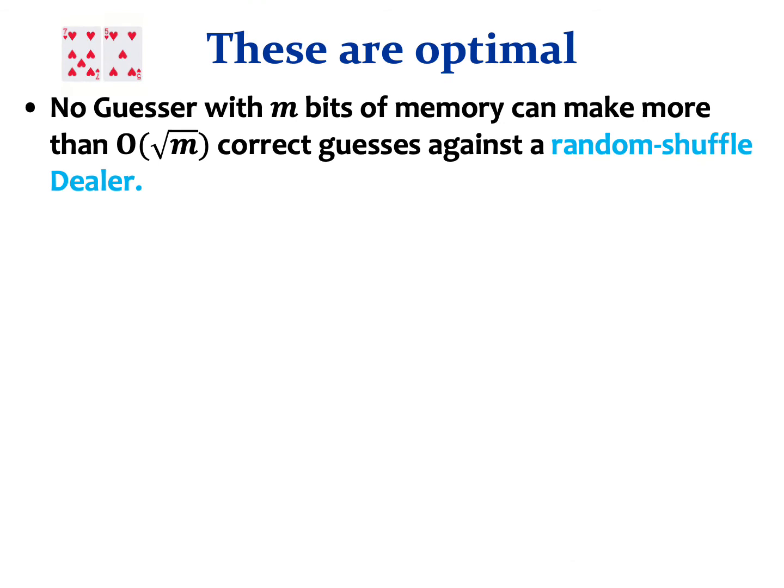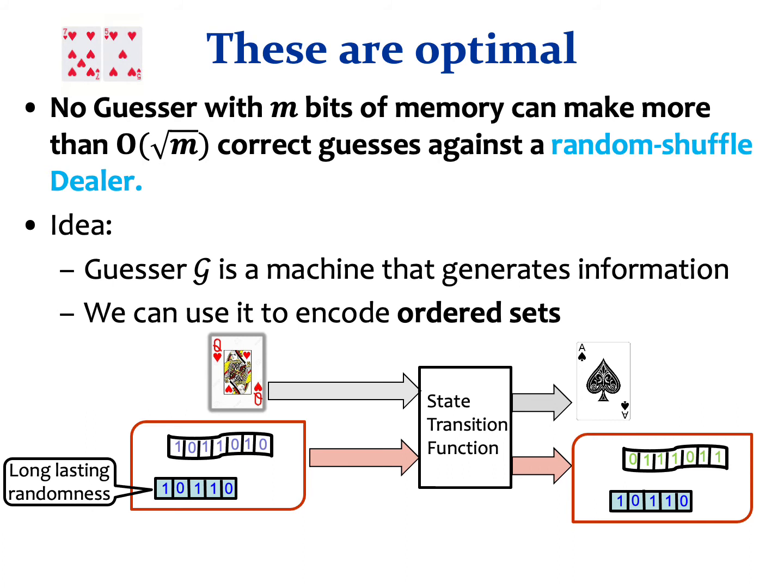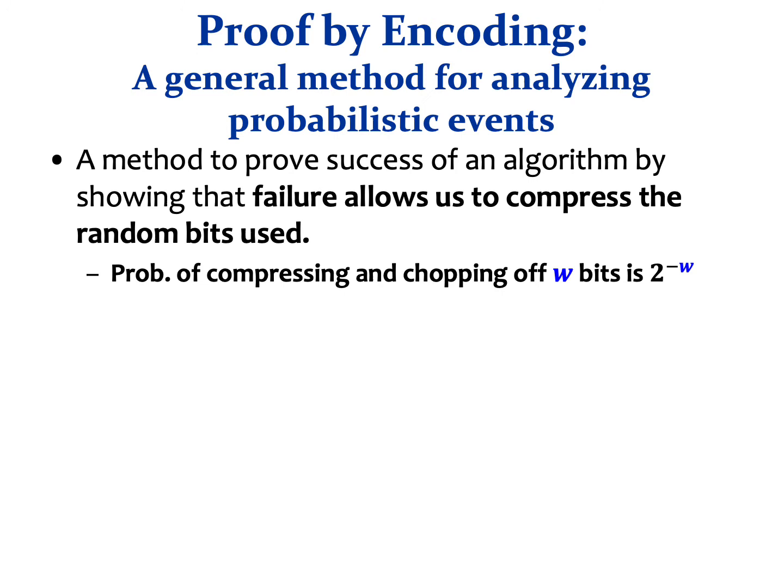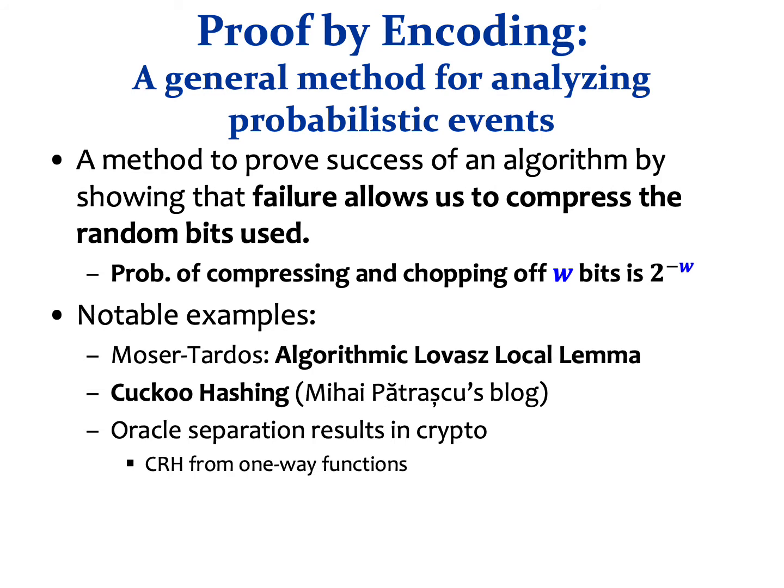But maybe there is something better we can do? The answer is no. No guesser with m bits of memory can score better than order of square root of m when playing against a random shuffle dealer — and this is also true for a static dealer. The idea is that a guesser is a machine that generates information, and if this information is particularly good, we can utilize it to encode ordered sets efficiently. Proof by encoding is a general method to prove the success of a randomized process by showing that bad events allow us to compress random bits used.